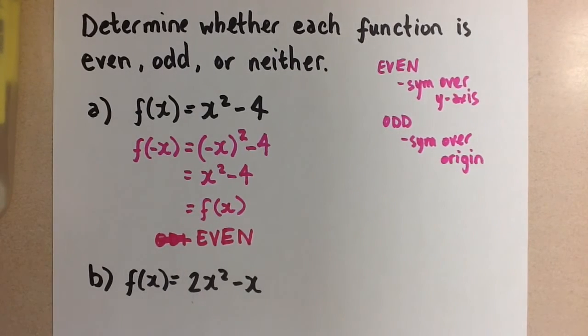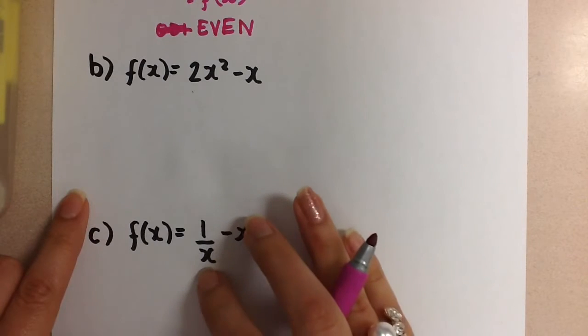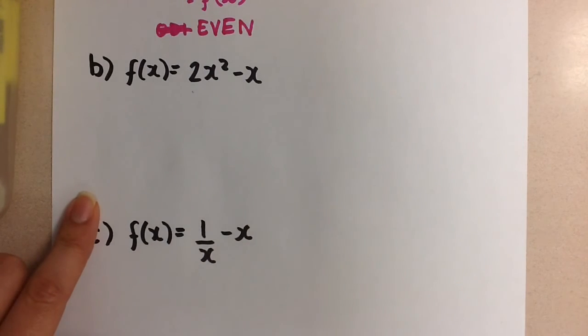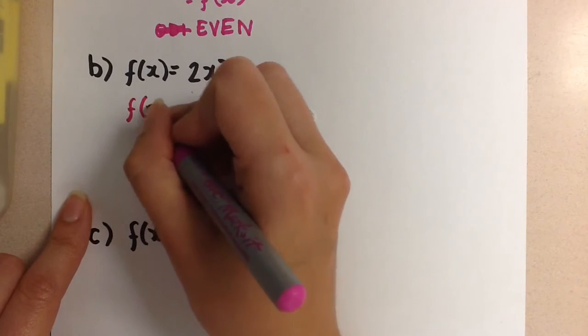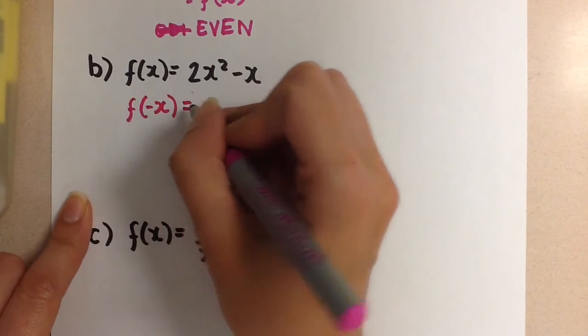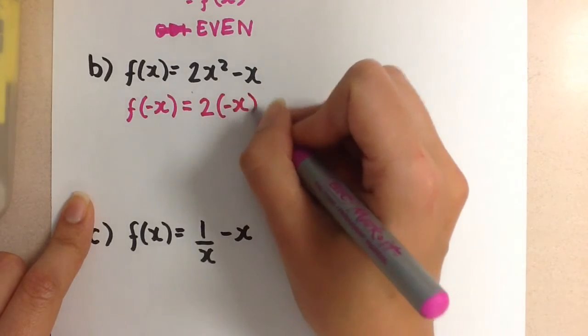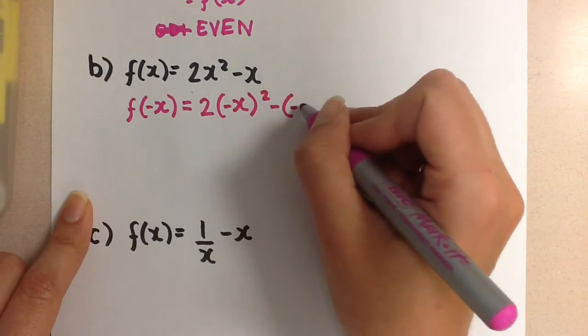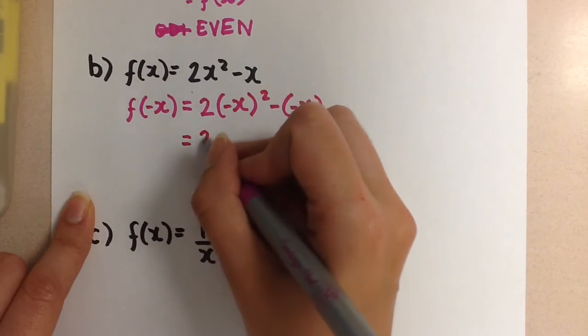Let's move on to the next one then. Here we have f(x) = 2x² - x. So we do the same test as always. We sub in f(-x).